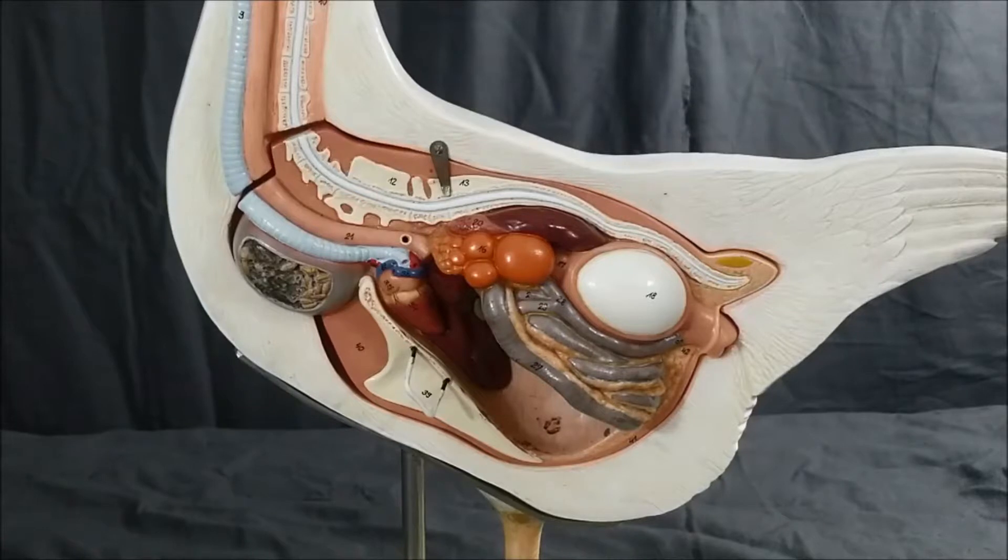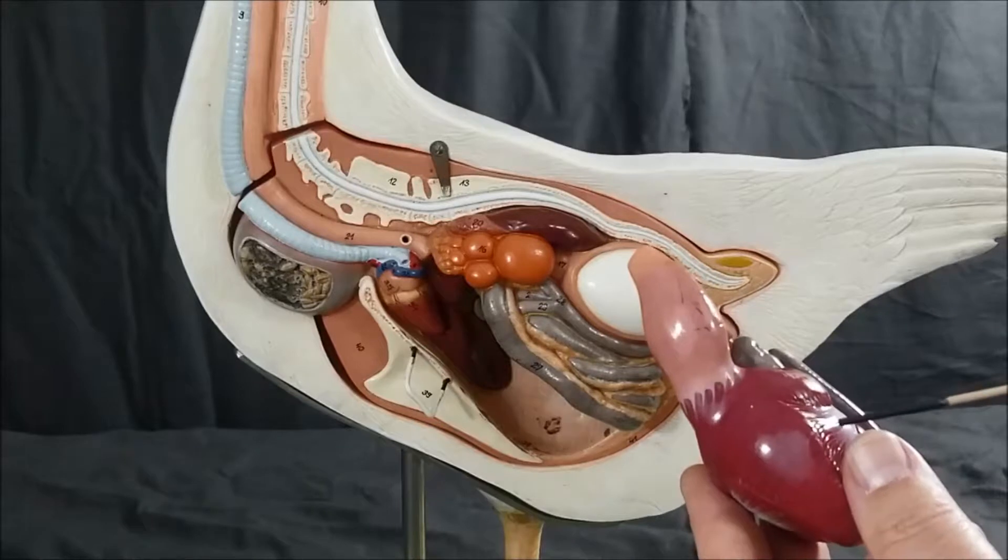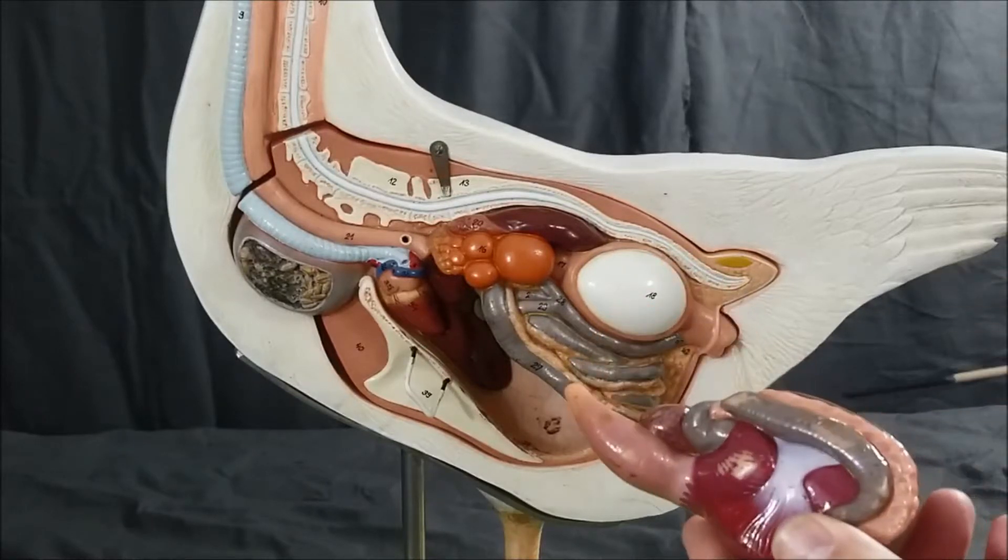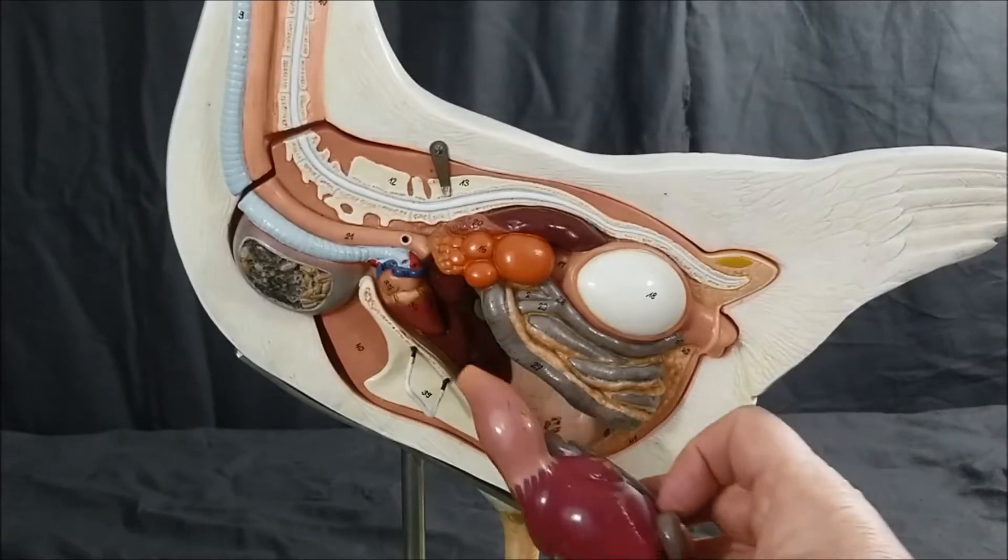Pieces that are not attached to this model include the proventriculus, the gizzard, the duodenum, and the pancreas. And these parts would go right about here.